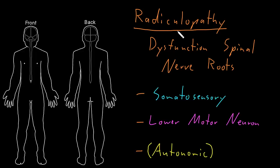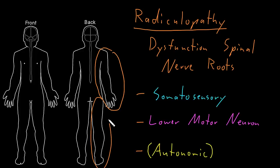Similar to the mononeuropathies, the most common radiculopathies involve the arm or the leg. Just like mononeuropathies, this tends to be on one side, although occasionally patients will get radiculopathies on both sides, but more often they have dysfunction of spinal nerve roots on one side of the body.